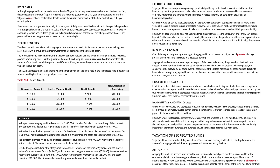For a market value of $9,000 at death, the death benefit is $1,000 and the amount paid to the beneficiary is still $10,000. When the market value at death is $10,000, there is no death benefit and the total amount paid to the beneficiary is $10,000. When the market value at death is $11,000, there is no death benefit and the total amount paid to the beneficiary is $11,000.